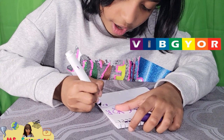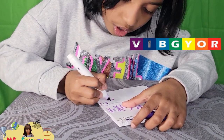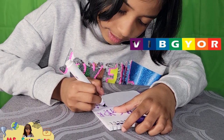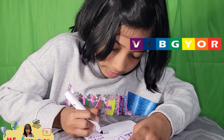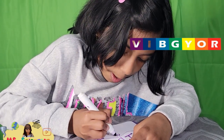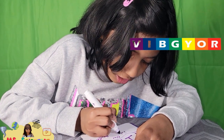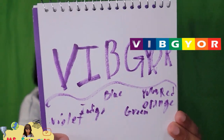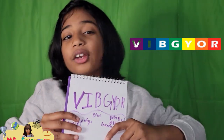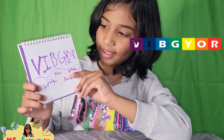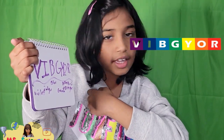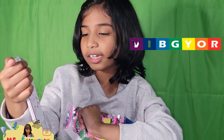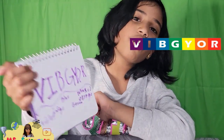Under R, write red. Under O, orange. Y, yellow. G, green. B, blue. I, indigo. And V is violet. You can also say this along with me: V is for violet, I — indigo, B is for blue, G — green, Y is for yellow, O is for orange, and R is for red.